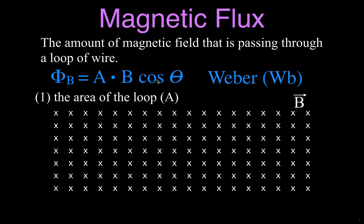The magnetic flux is dependent upon three things: the area of the loop of wire, the magnetic field strength, and the angle between the loop and the magnetic field. We're going to go through each of these — the area, the B, and the cosine of theta — in this video.